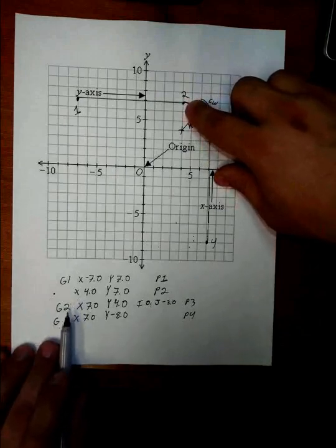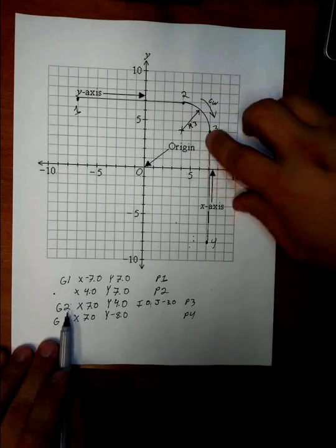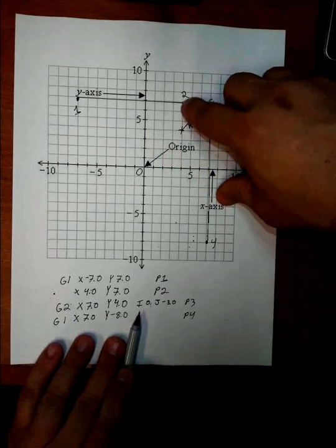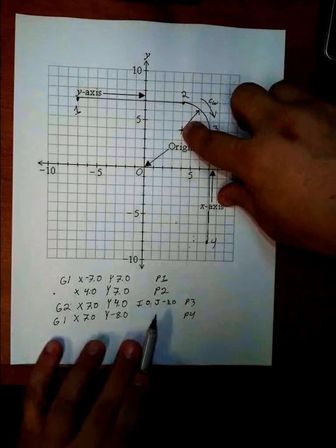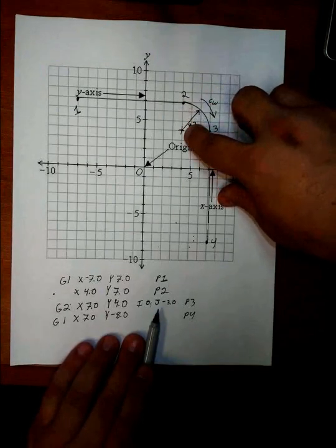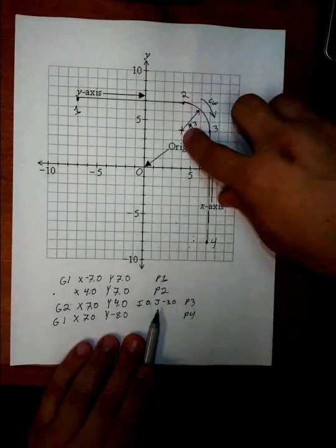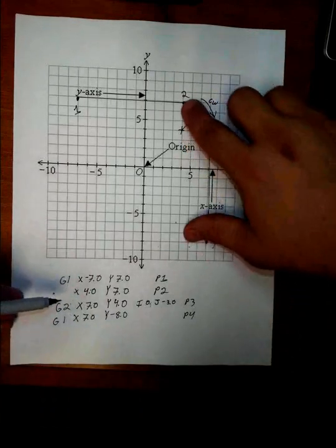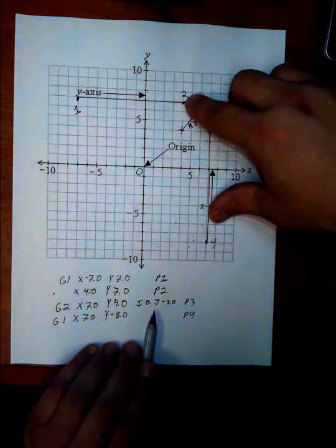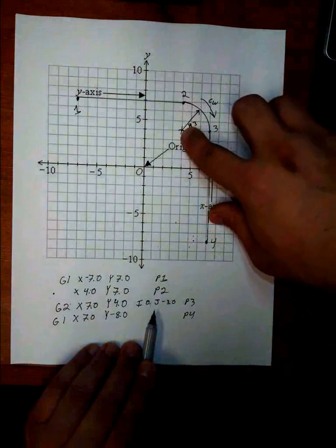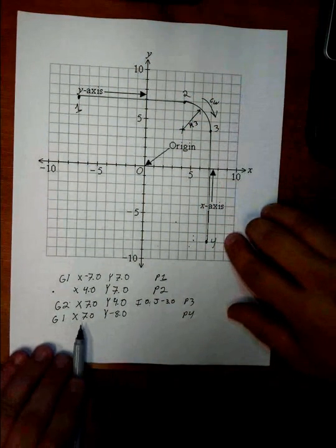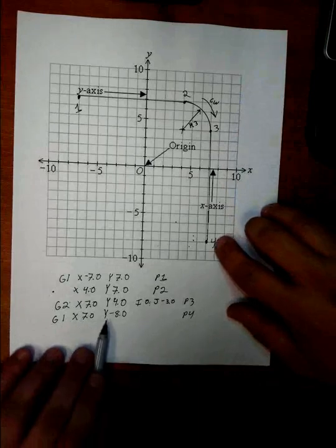From the start of the arc at 4, 7, I end the arc at 7, 4. In the origin of the arc, from X, there is no change. So my I is a 0. In J, from the start of the arc to the center of the arc, it goes down 3 points, so a minus 3. So again, start of the arc, end of the arc, distance from the start of the arc to the center of the arc, called out in I and J. And then from 3 to 4, we just do another linear move, X positive 7, Y minus 8.